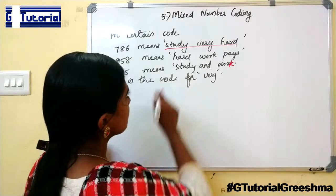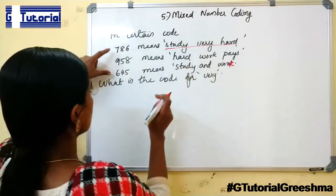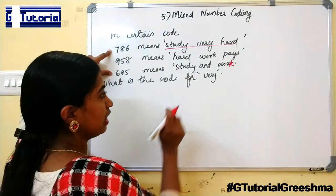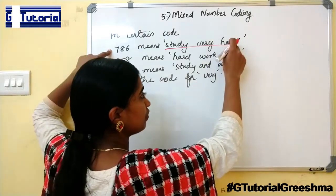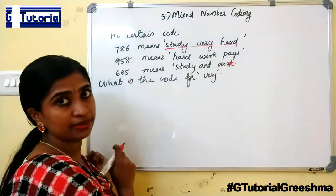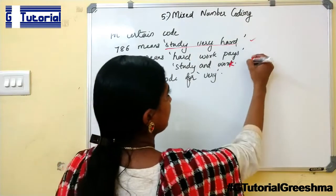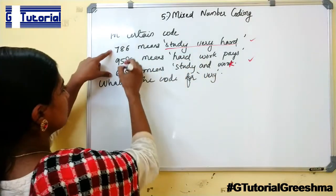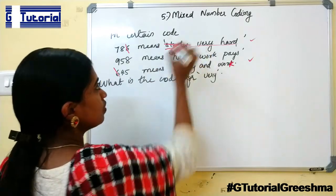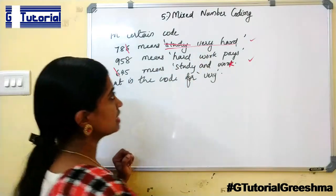Study is present in these two sentences. So if you are finding the code for study and eliminating that, and similarly hard is the other word in that sentence. So eliminating study and hard, you will get the code for very. Study is present here and here. Common number in these two is 6, so you can eliminate that as the code for study. Next is hard.